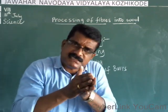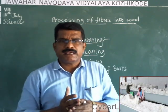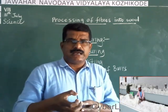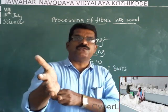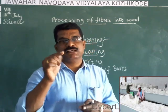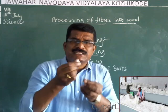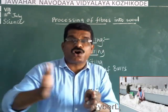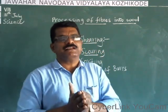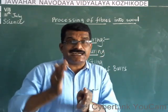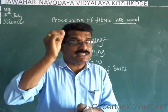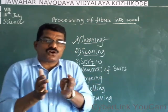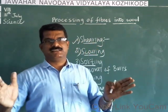After scouring, the next step is sorting. Sorting means separating. The sheared and scoured fleece contains very long fleece as well as very short fleece, thick fleece and thin fleece. Based on the texture — that means the thickness and length — the fleece needs to be classified or separated. This process of separating the sheared and scoured fleece based on texture is known as sorting.